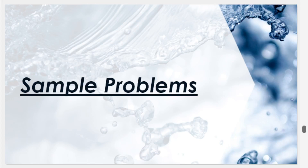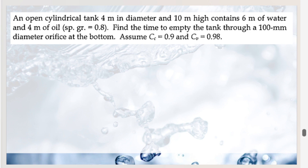Let's start with our sample problems regarding unsteady flow and weirs. This will be a separate video dedicated for sample problems regarding our lecture — the lecture link will be provided in the description below. Let's start with this problem: an open cylindrical tank, four meters in diameter and 10 meters high, contains six meters of water and four meters of oil with a specific gravity of 0.8. We are asked to find the time to empty the tank through a 100 millimeter diameter orifice at the bottom. Assume C_c = 0.9 and C_v = 0.98.